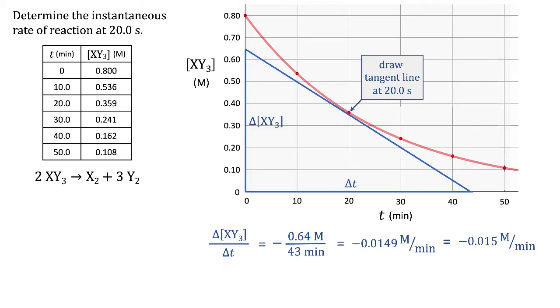If the question asked for the instantaneous rate of change of XY₃, we'd be done. But the question asked for the instantaneous rate of reaction. We must remember that for a given reaction, each substance—XY₃, X₂, and Y₂—are changing at different rates. XY₃ has a coefficient of 2, X₂ has a coefficient of 1, Y₂ has a coefficient of 3. XY₃ is decreasing because it's being used up; X₂ and Y₂ are increasing because they're being formed.